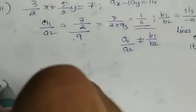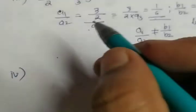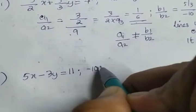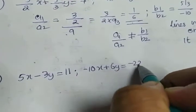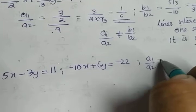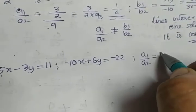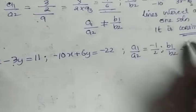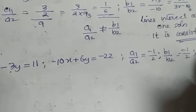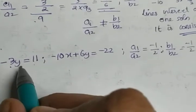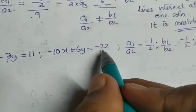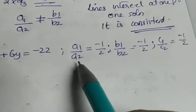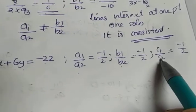Moving to the fourth part. The equation given is 5x minus 3y is equal to 11 and minus 10x plus 6y is equal to minus 22. a1 by a2 is equal to 5 by minus 10, which is minus 1 by 2. b1 by b2 is minus 3 by 6, which is again minus 1 by 2. c1 by c2: taking the constant term to the left side, minus 11 by minus 22 gives minus 1 by 2. So a1 by a2 equal to b1 by b2 equal to c1 by c2.